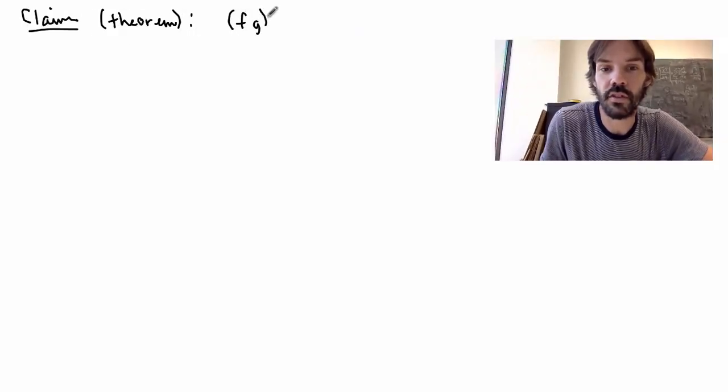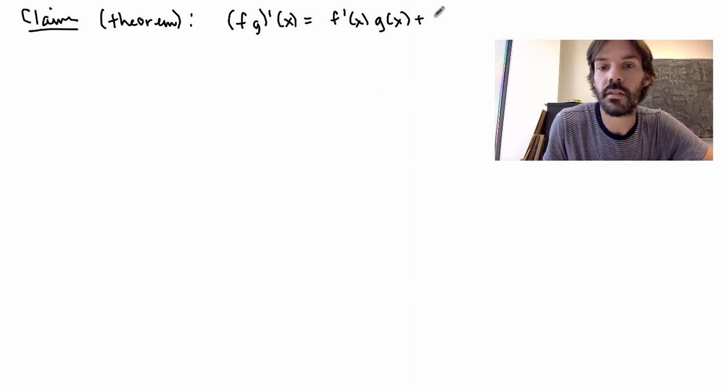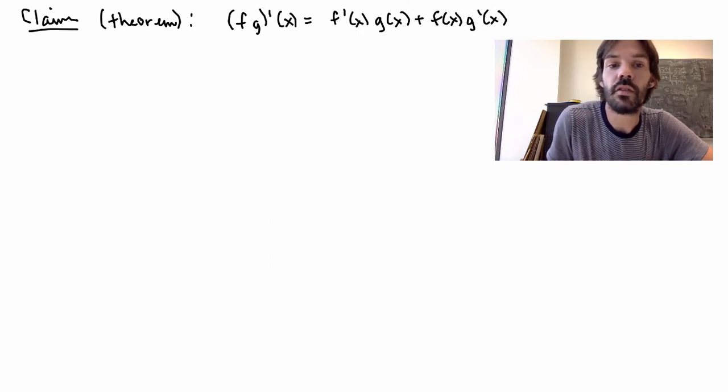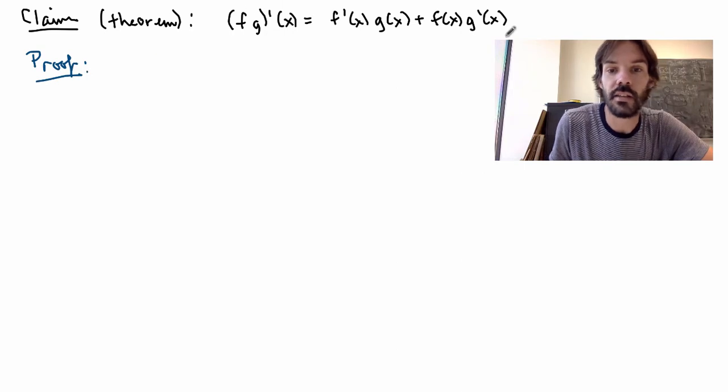It's just the product rule, so it's just the statement that the derivative of the product of two functions is equal to f prime of x, g of x, plus f of x, g prime of x. So what I want to do now is prove that. What this means is that I'm going to start from the definition of derivative and show that it implies that this rule here has to be satisfied.